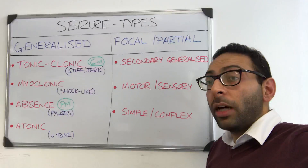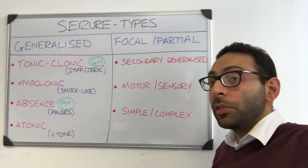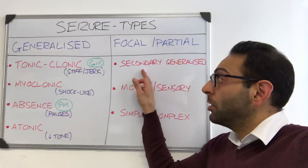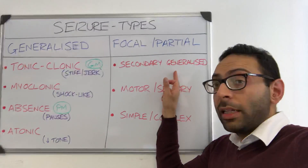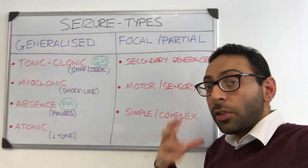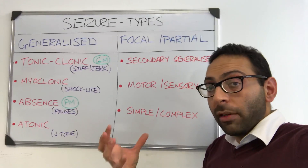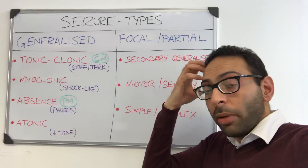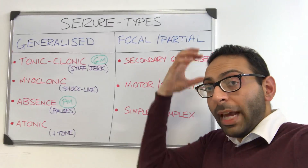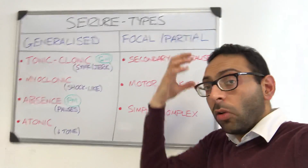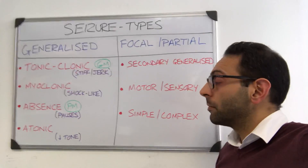Then you have your focal or partial seizures. One important type to remember is secondary generalized seizures — one that starts off focal but ends up being generalized. So it starts off in one part of the brain but ends up covering the whole brain itself.